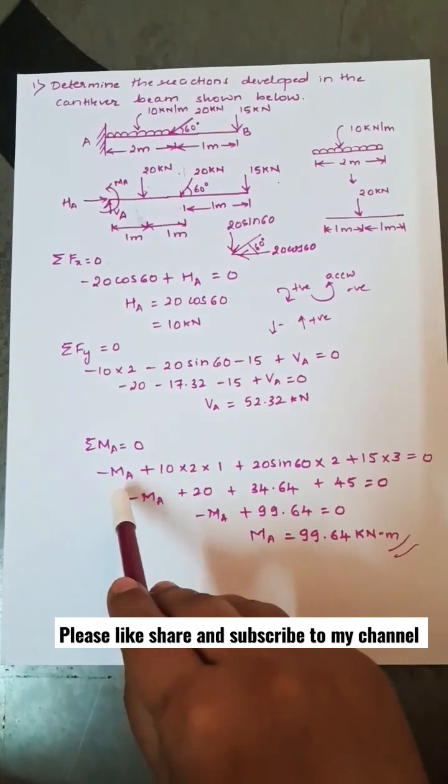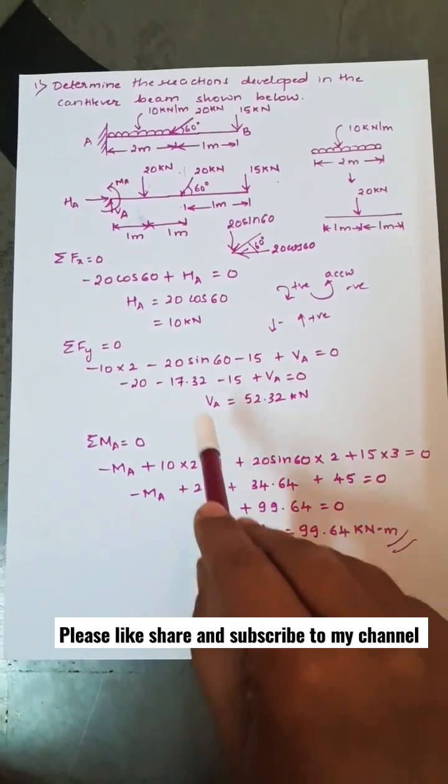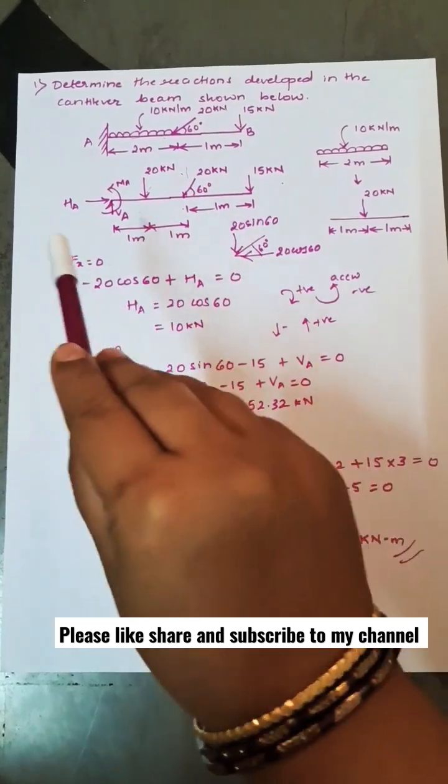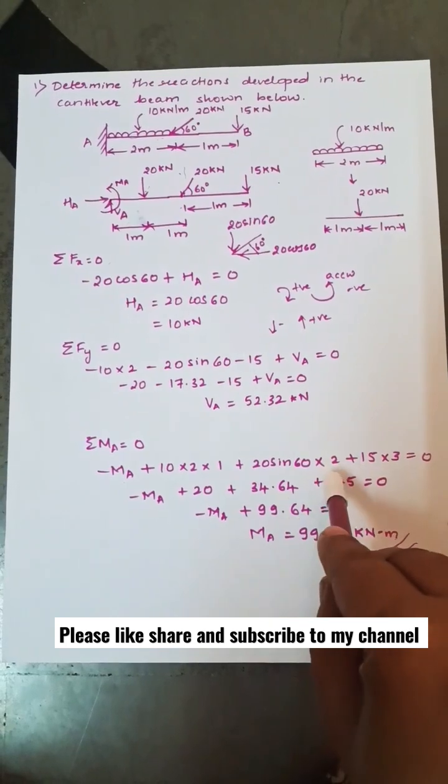So minus Ma plus 10 into 2 into 1, that is UDL acts at center, so 10 into 2 is magnitude into 1 distance from point A. Then 20 sin 60 is at a distance of 2 meters, so it causes a clockwise moment, so 20 sin 60 into 2.